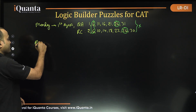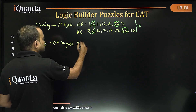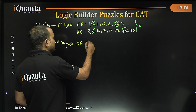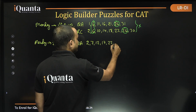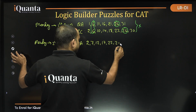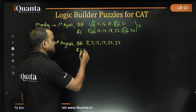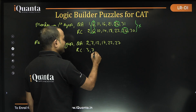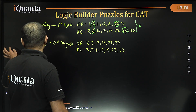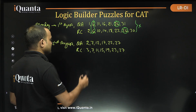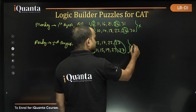If Monday falls on 2nd August, then Avisek will teach quant on: 2nd, 7th, 12th, 17th, 22nd, and 27th. Since 2nd is Monday, 3rd will be the first Tuesday, so RC will be taught on: 3rd, 7th, 11th, 15th, 19th, 23rd, and 27th. Once again, we can see there will be 2 common days — 7th and 27th — so this combination is also not possible.